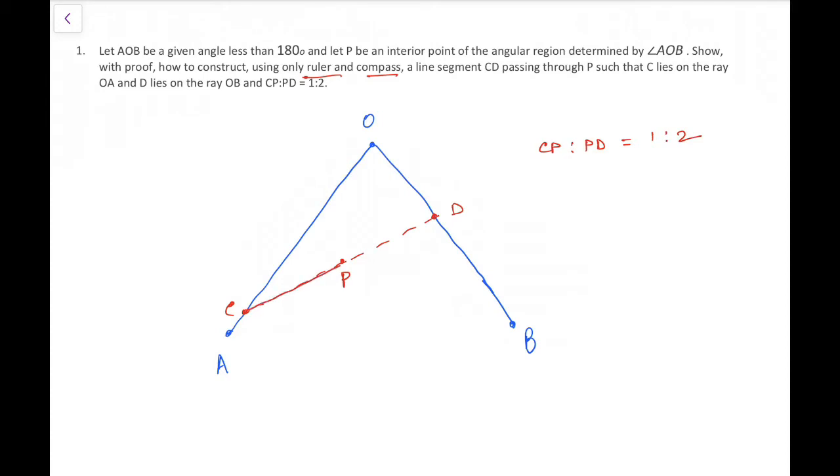The length of CP to the length of PD is 1 over 2, and we want to find such a line segment CD passing through P given any interior point P. The point C has to be on the ray OA and the point D has to be on the ray OB.